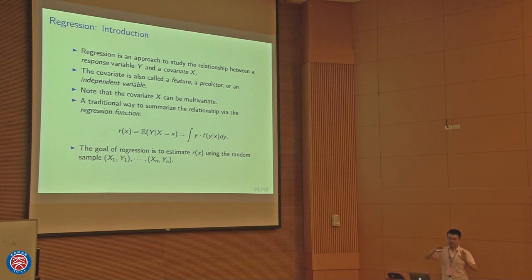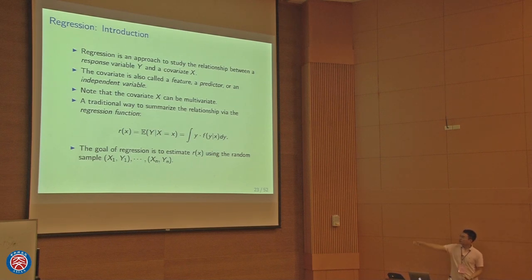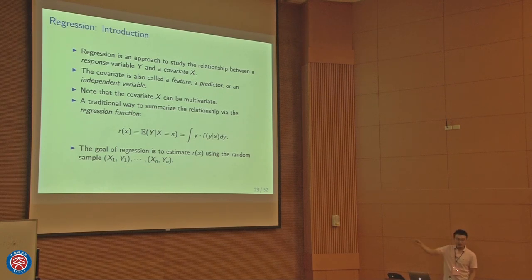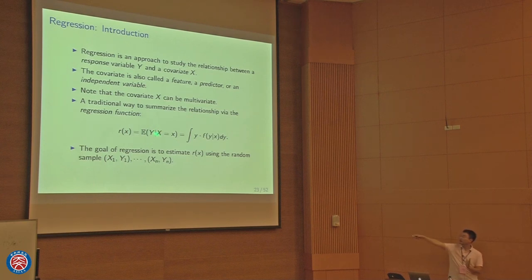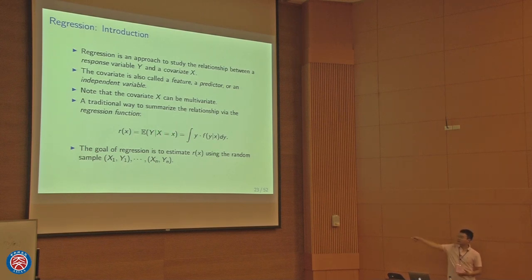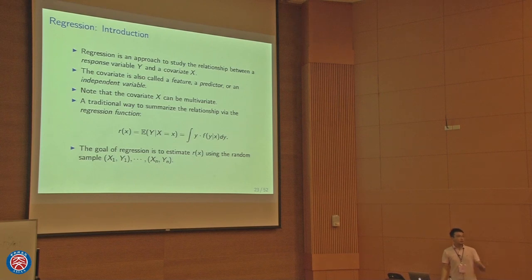In regression analysis, the traditional way to summarize the relationship is using the regression function. The regression function m(x) is the expected value of the response y given the covariate being x — i.e., the conditional expectation E[Y | X=x]. The goal of regression is to estimate this regression function using observed data pairs (x1,y1), (x2,y2), ..., (xn,yn).